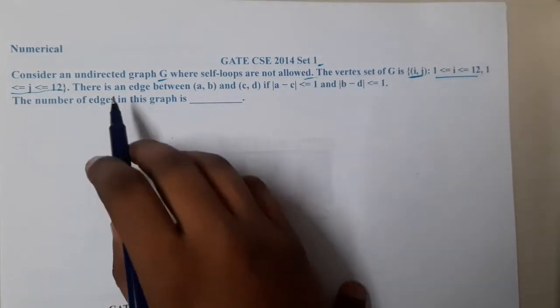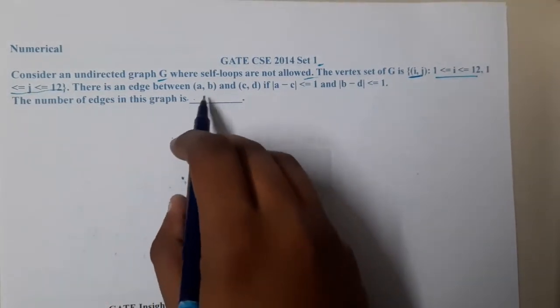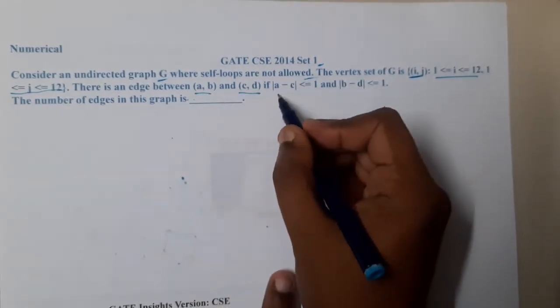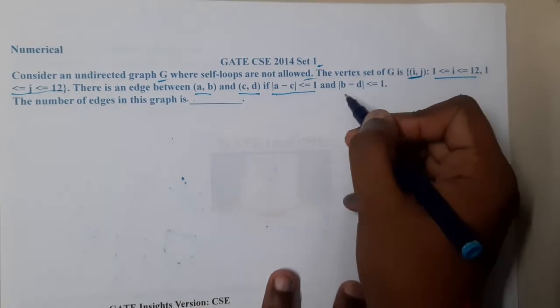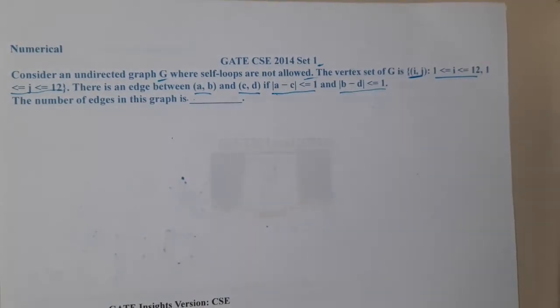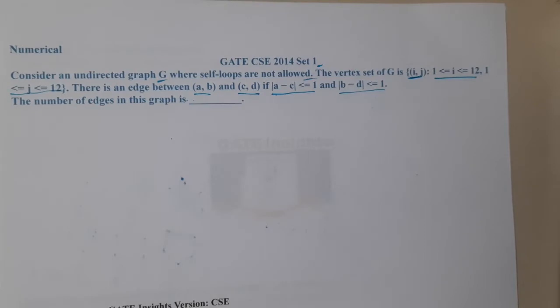There is an edge between (a,b) and (c,d) if and only if the distance from a to c is less than or equal to 1, and similarly the distance from b to d is less than or equal to 1. The number of edges in this particular graph is... the question seems really interesting, right?